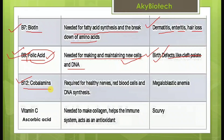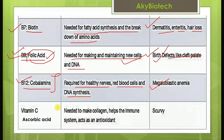Vitamin B12 — the cobalamins. It is required for healthy nerves, red blood cells, and DNA synthesis. Its deficiency leads to megaloblastic anemia.